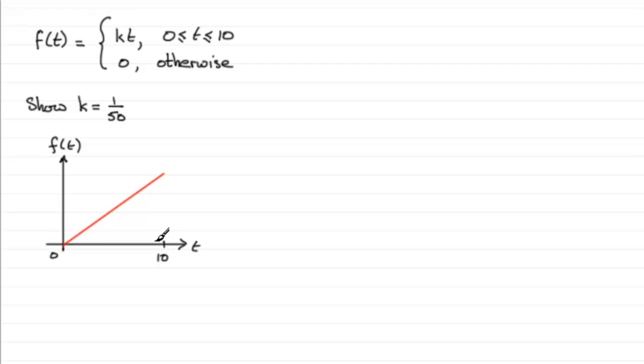We've got the origin here. And when you plug 10 into kt, you get 10k. So this value up here is 10k. So let's just draw a dotted line back down to that 10 there.